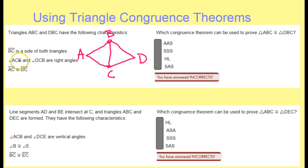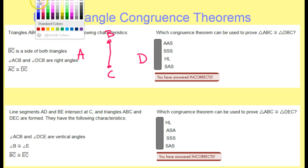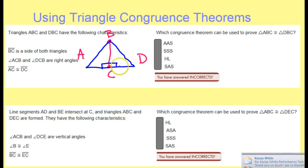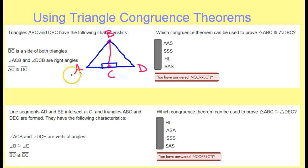Angle ACB and DCB are right angles, so this is supposed to be 90 degrees. And DCB — these are supposed to be 90 degree angles, so I have to redraw my picture to make them 90 degree angles. Now we've got the 90 degree angle thing happening. Segment AC is congruent to segment DC, so that means this is congruent to this.